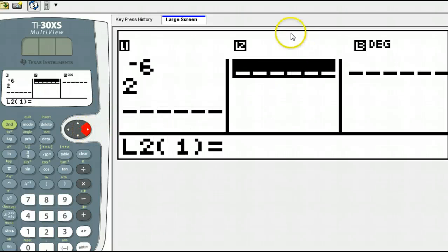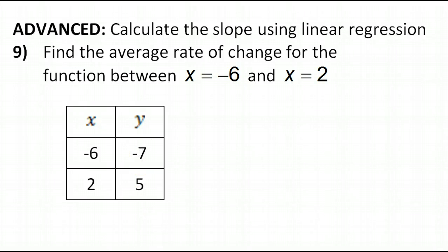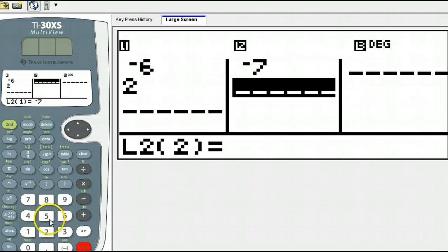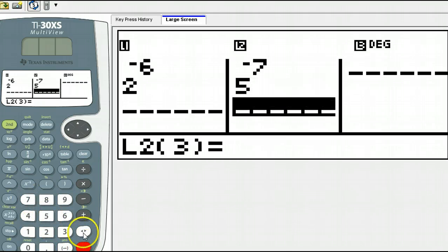Now use your right arrow key to get over into the Y values. And now let's type in negative 7 and 5. So there's negative 7 and 5.